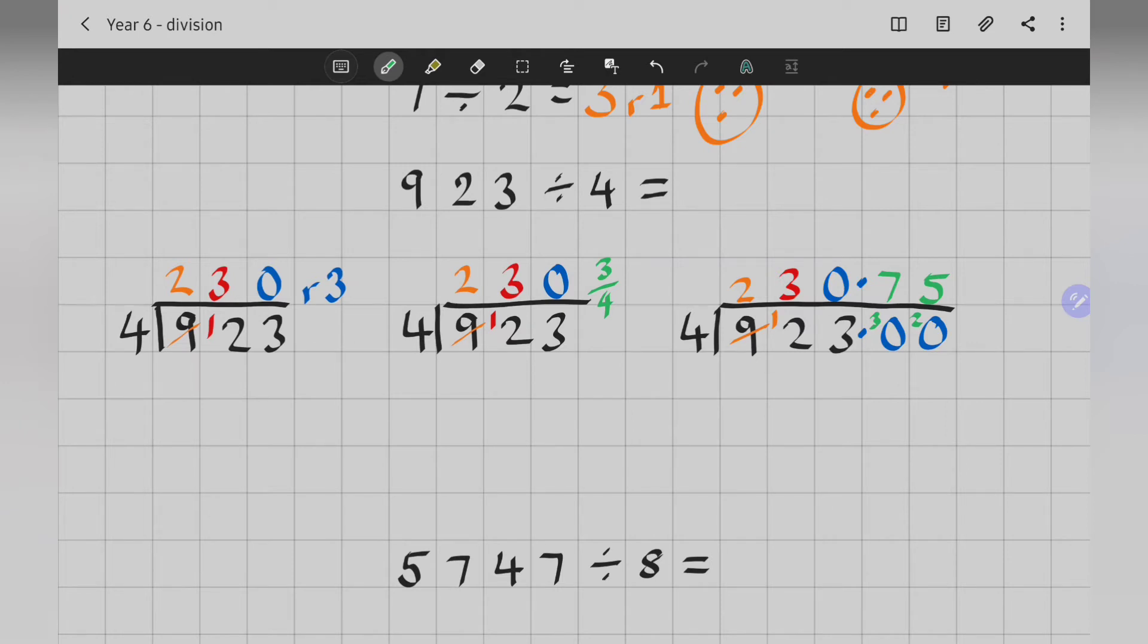So, there's the three different ways we can show our remainders. Remainder 3, 3 quarters, 0.75. Now, I know that if I did 3 divided by 4, I would also get this answer 0.75.